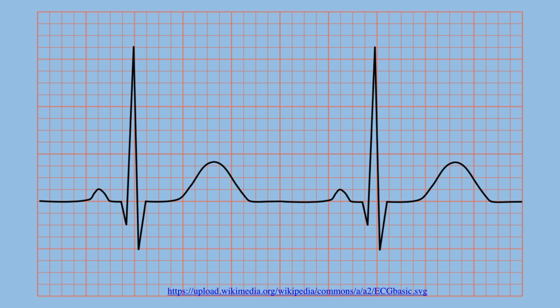The rate: the big square stands for 300, so if the R-R distance is one big square it would be 300 beats per minute. If it's 2, then 300 divided by 2 would be 150; if 3, it's 100; if 4, it's 75; and if 5, it's 60 — which is the boundary, as less than 60 would be bradycardia.